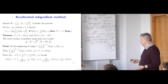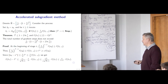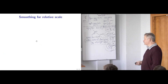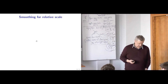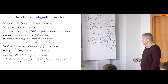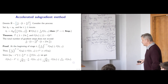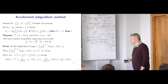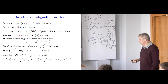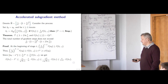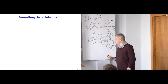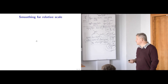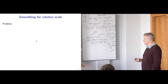We already know that this bad dependence in accuracy, when speaking about absolute accuracy, can be eliminated using the smoothing technique. Can we do the same here? Can we introduce smoothing in this model of our function for the relative scale? And again, the answer is yes.